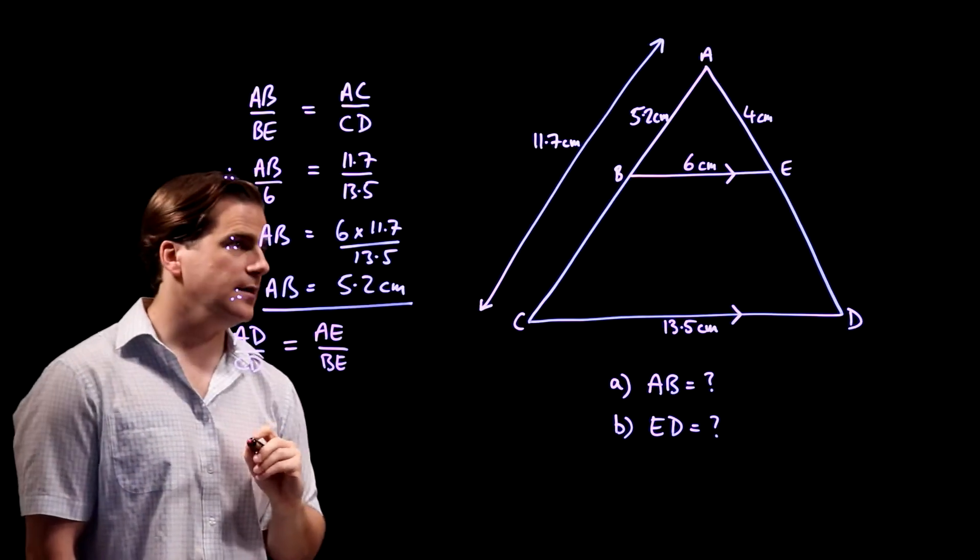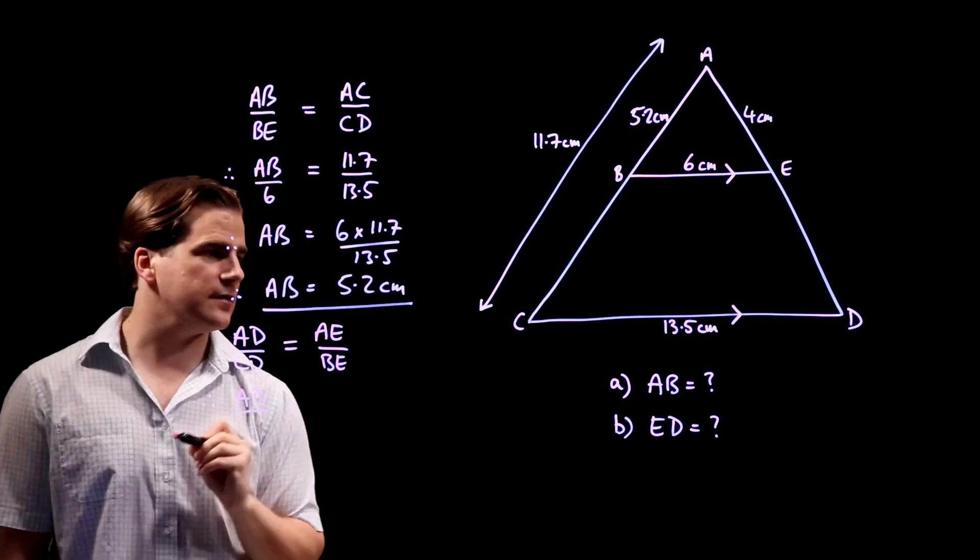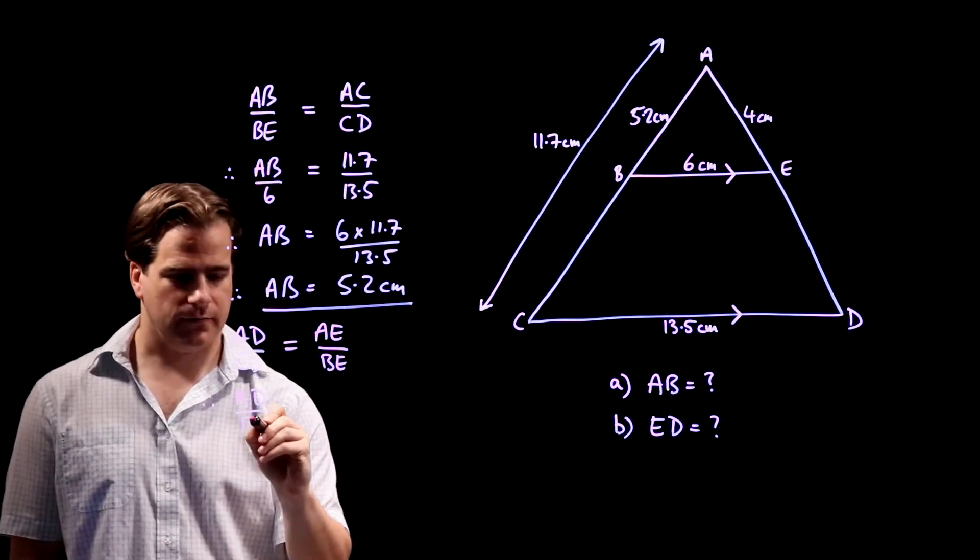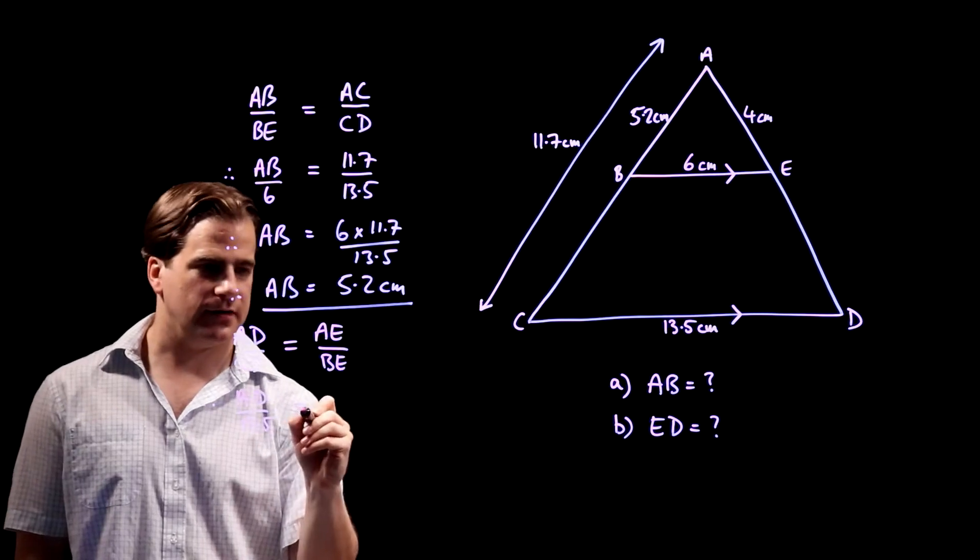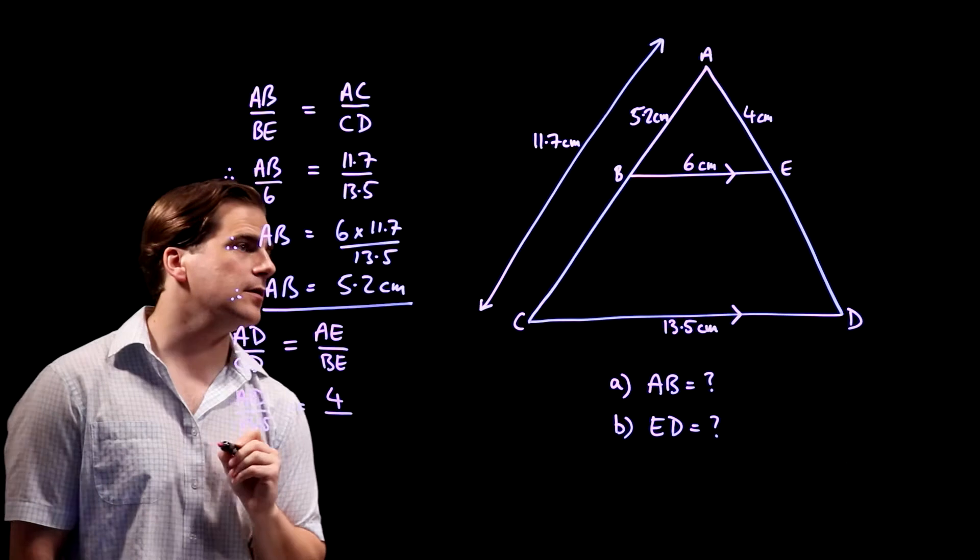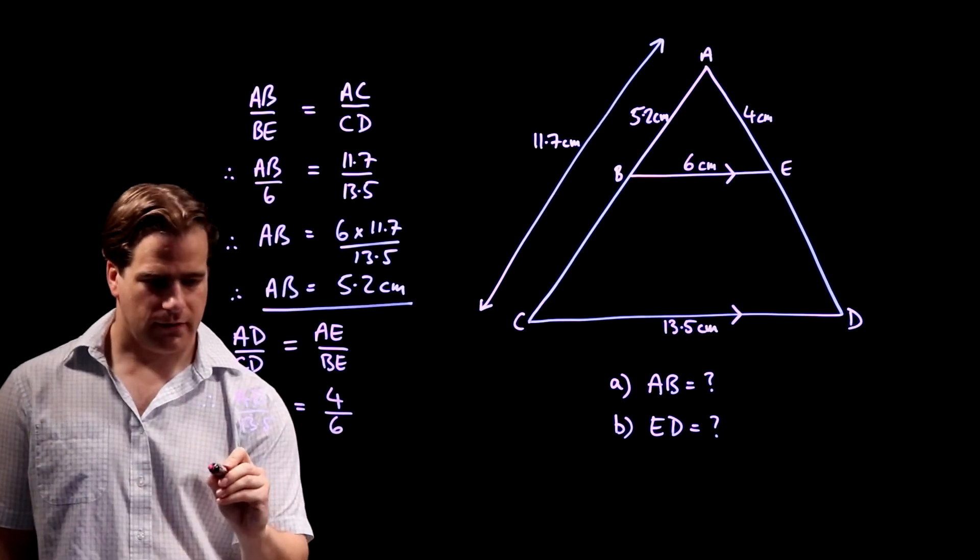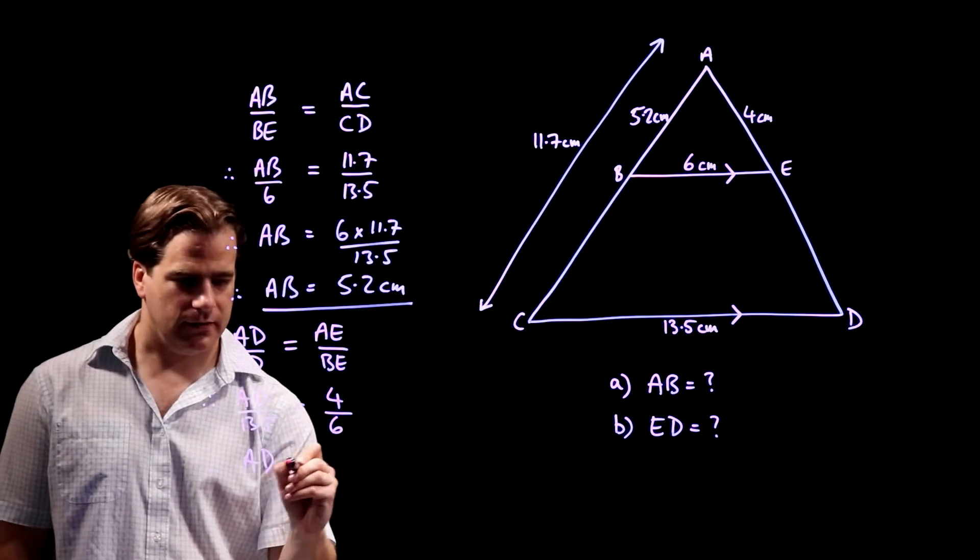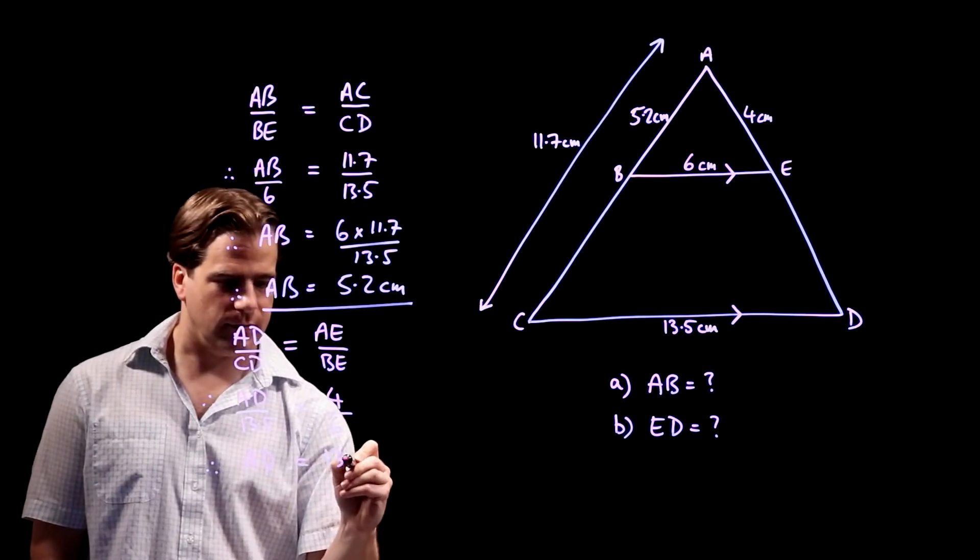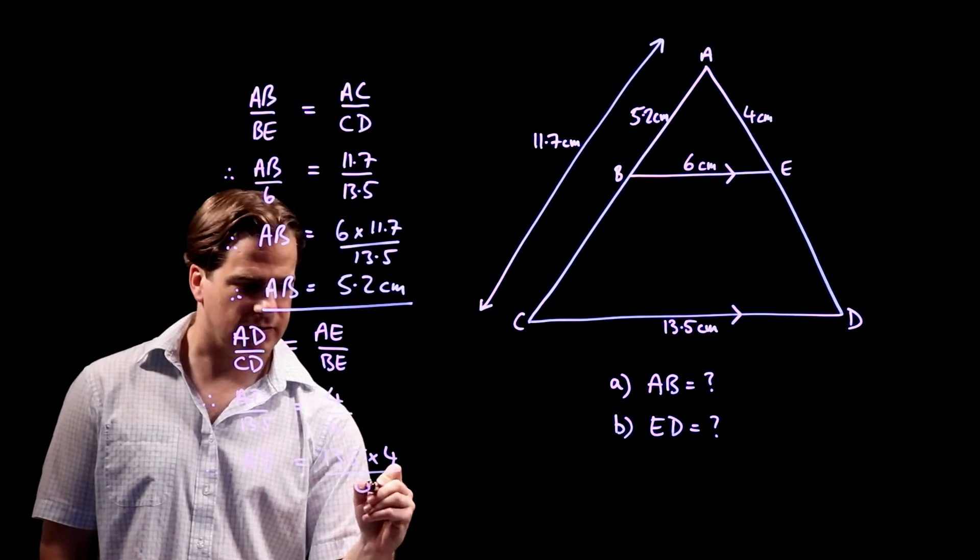AD over 13.5 is 4 over BE which is 6. Therefore, AD is 13.5 times 4 over 6.